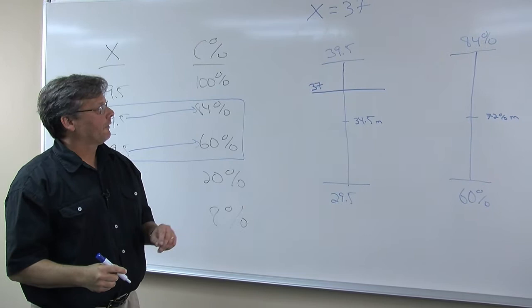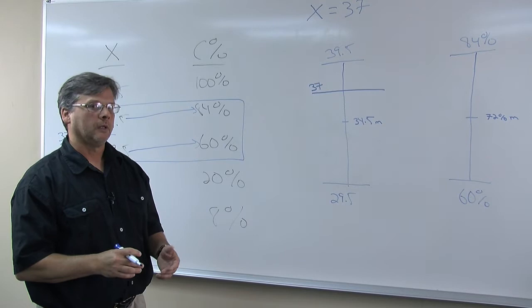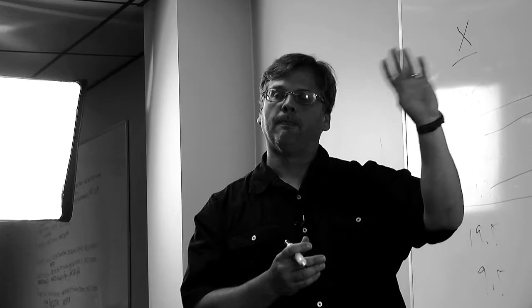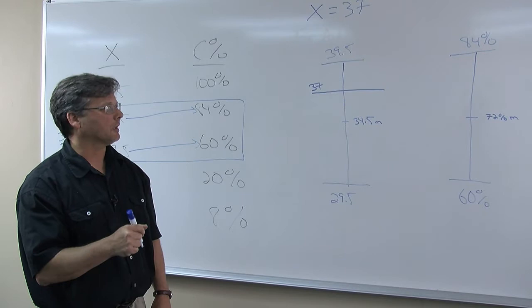And before you go any further, what you might want to think about is, even though we haven't done any calculations to figure out the decimal yet, you should anticipate that the decimal that we get should be less than 0.5. Because remember, when we calculate a decimal, a decimal expresses the portion of the scale that's above the intermediate value. So we're going to anticipate, in our future, a decimal less than 0.5.